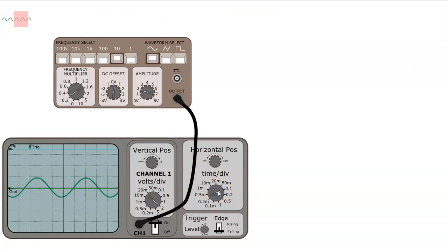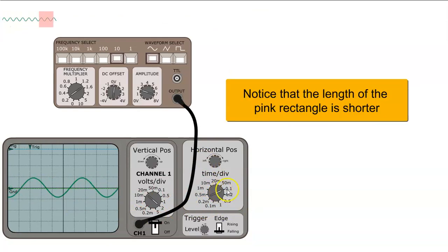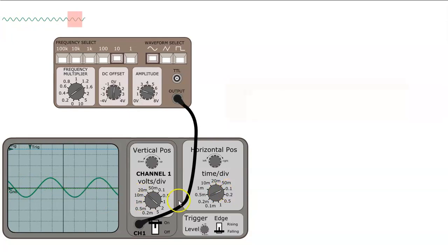If I change the dial to 0.1 seconds per division we now have 1 second of the waveform which we can see is the waveform that's been produced by the output of the signal generator. Now we can see that the waveform is kind of jumping all over the place which means that it's not been triggered.